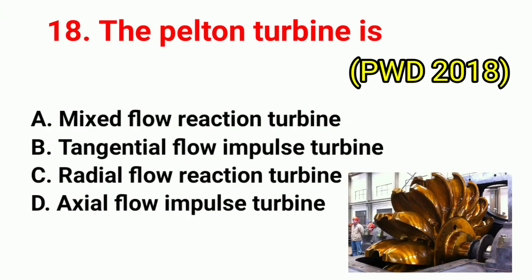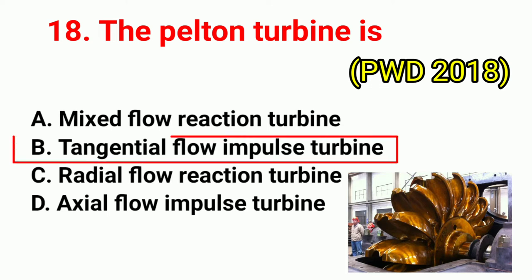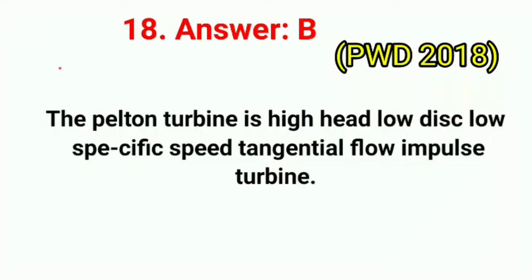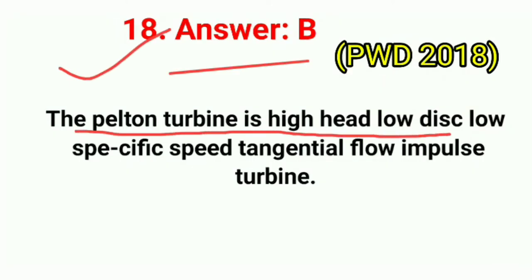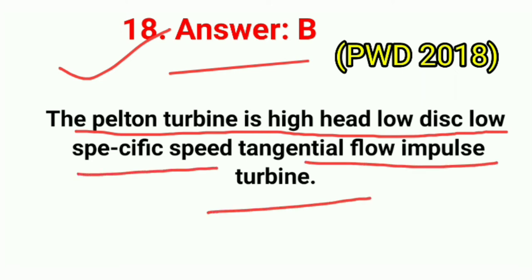Question No. 18. The Pelton turbine is? Correct answer is option B: tangential flow impulse turbine. The Pelton turbine is a high head, low discharge, low specific speed, tangential flow impulse turbine.